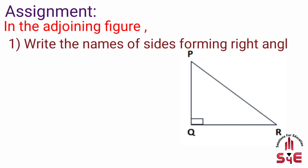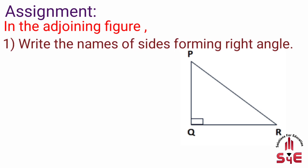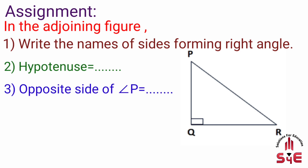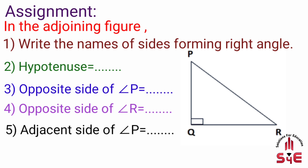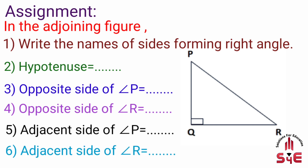Assignment questions: 3. Opposite side of angle P. 4. Opposite side of angle R. 5. Adjacent side of angle P. 6. Adjacent side of angle R. Sabhi questions ke solutions aage diye gaye hain.